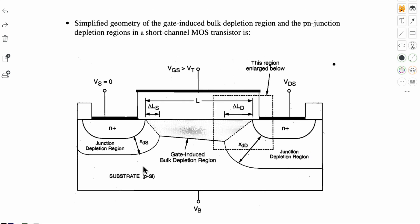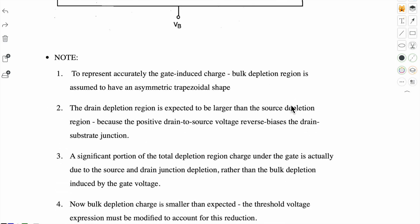So this is the simplified geometry of the gate-induced bulk depletion region. It is not rectangular; it is a trapezoidal region. And near the source and drain, see how much depletion region there is, which we ignored in the long channel. So for short channel devices, we note these points.